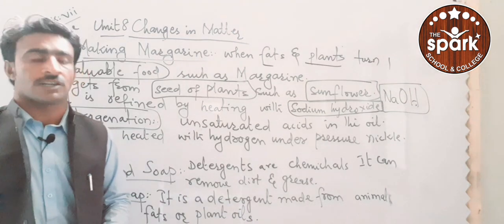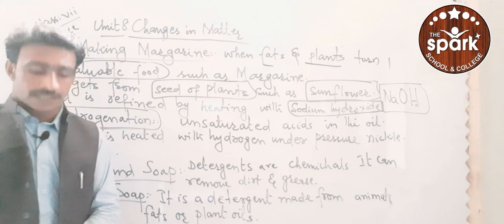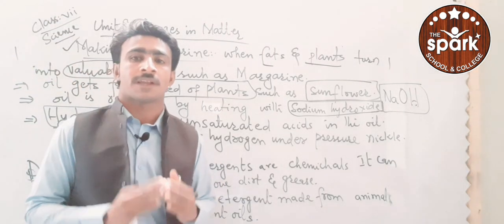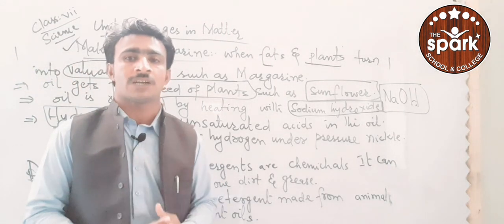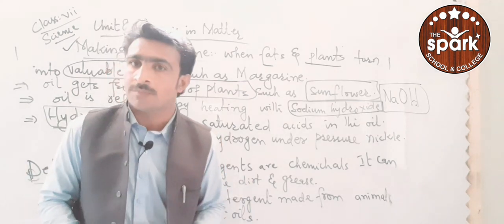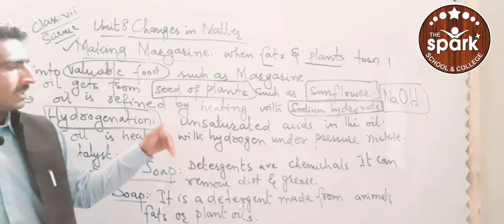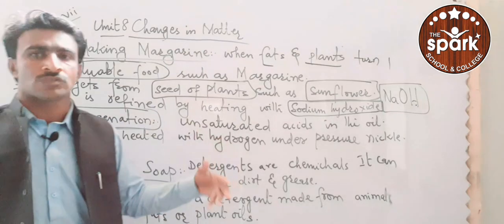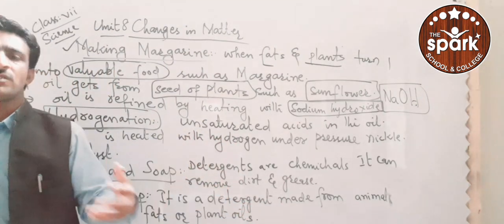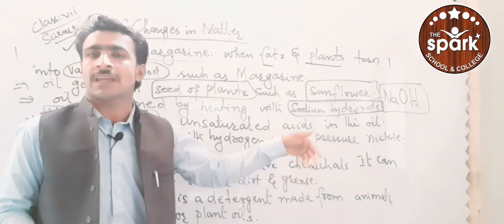How can we get detergents and soap? Detergents are chemicals which help to remove grease and dirt from clothes, metals, and other materials. Detergents — whether applied to clothes, metal, or any other material — help us remove grease and dust. Detergents are chemicals.